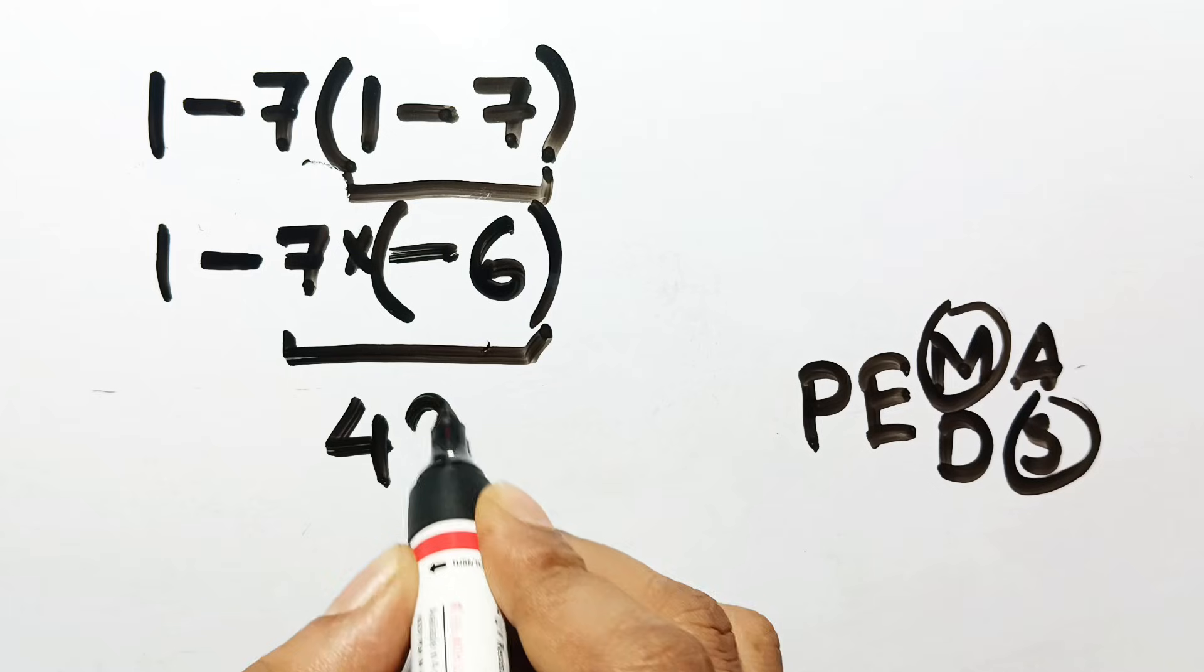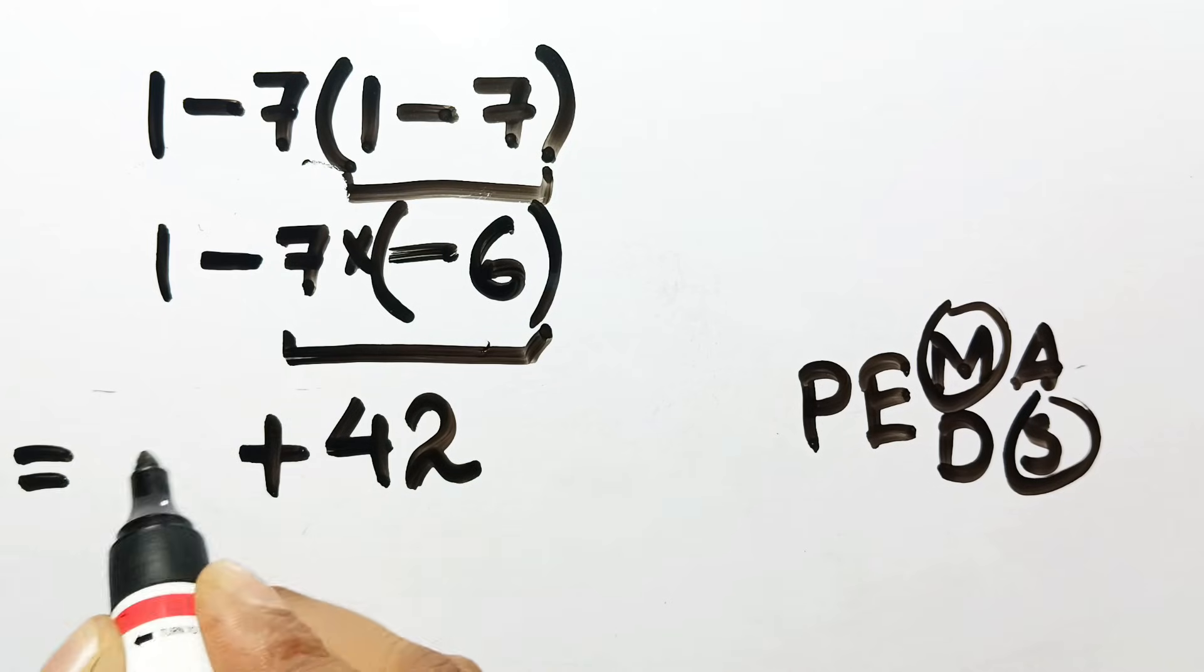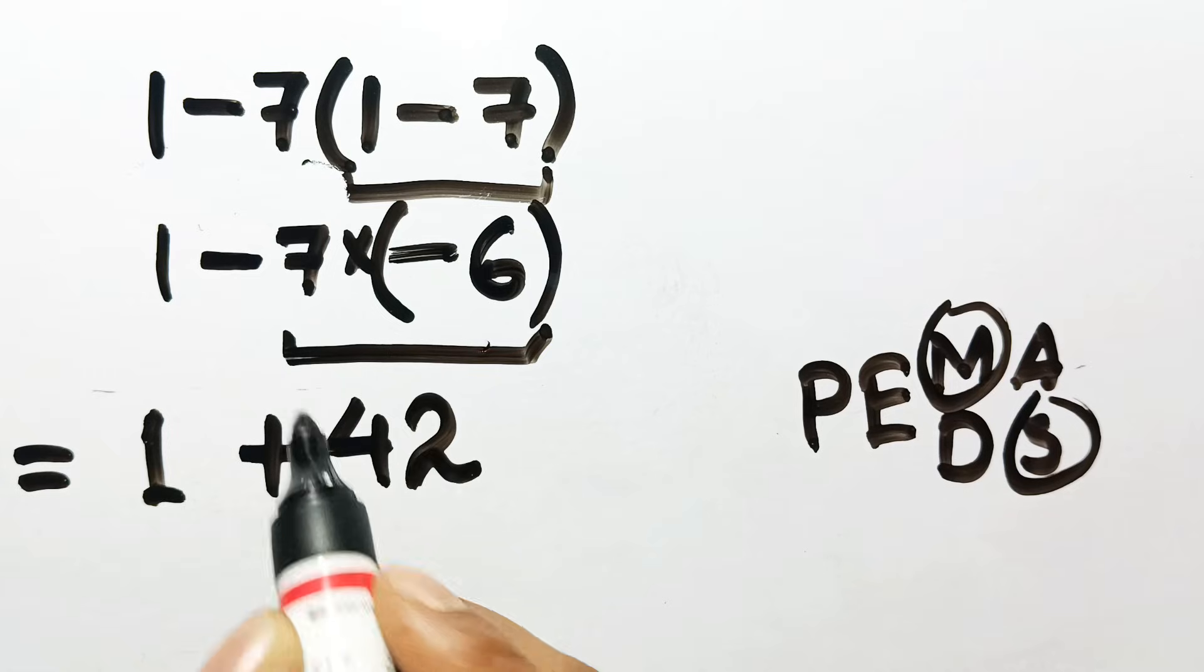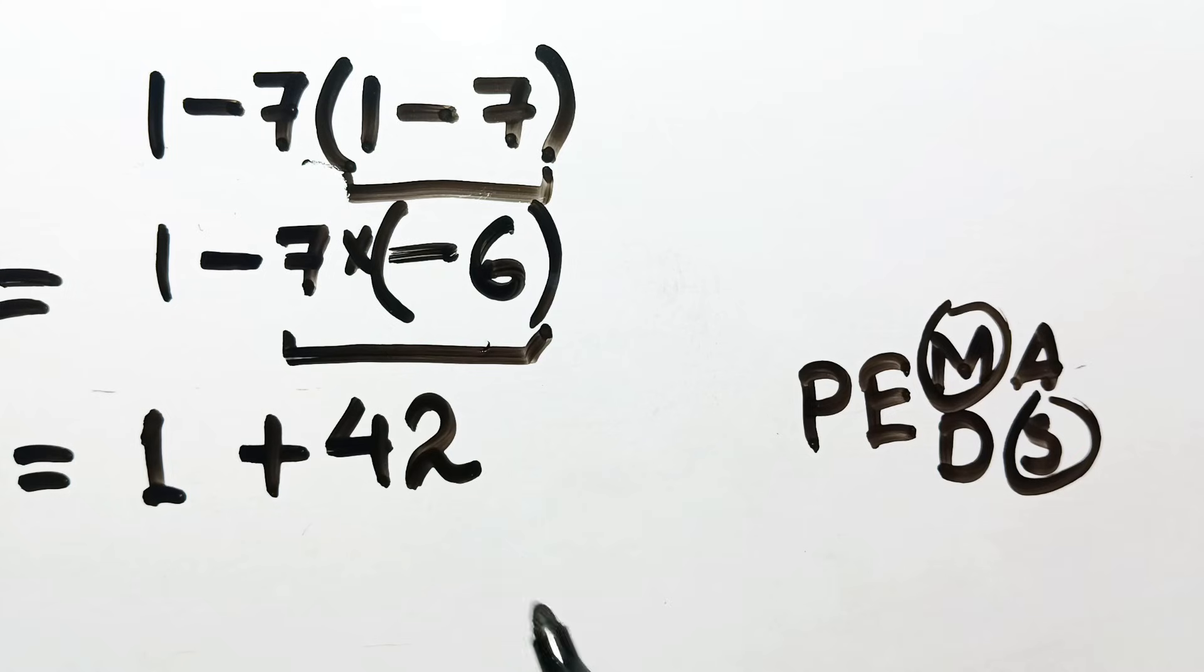Because both signs were negative, it becomes plus 42. Now we bring down the 1 from the start, so the equation is simply 1 plus 42. Can you see why the first answer was wrong?